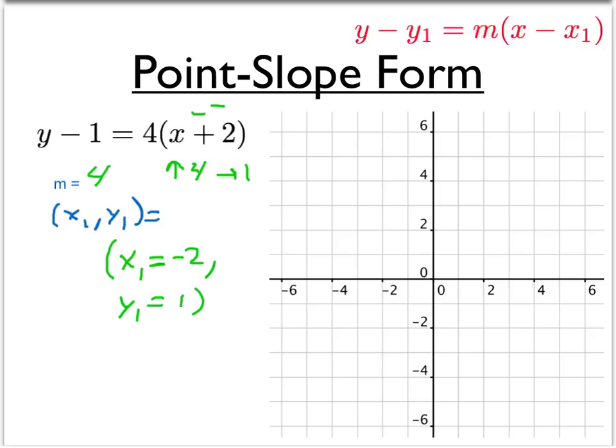So then let's graph our line. Let's start with the point. The point is x1 is negative 2, y1 is 1. So negative 2, 1. So back 2, and then up 1. So here we have our very first point. And then let's apply the slope.